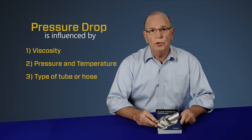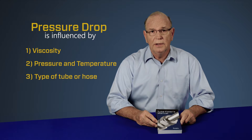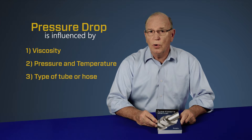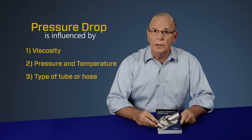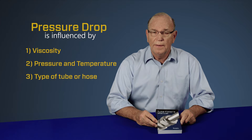Third is the tube or hose that is involved. Does it have a smooth inner core, or is it convoluted and creates turbulent flow?